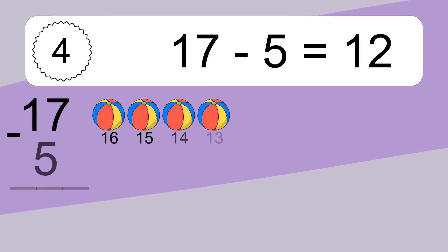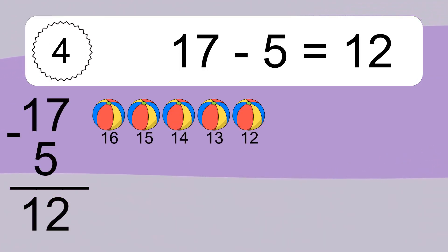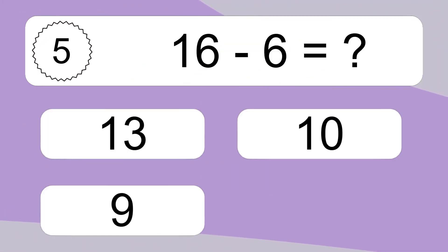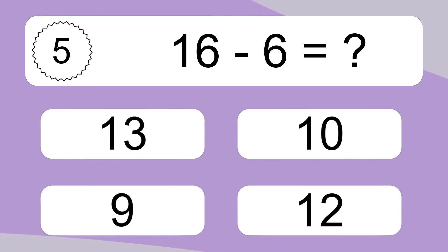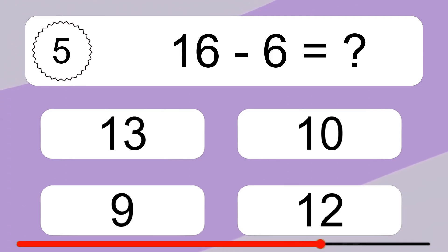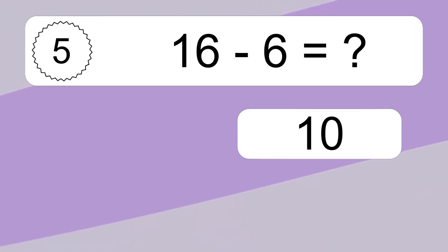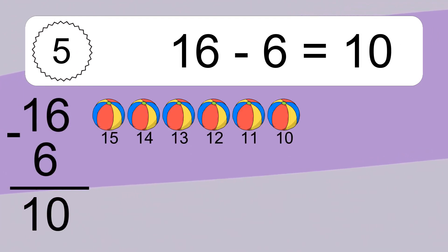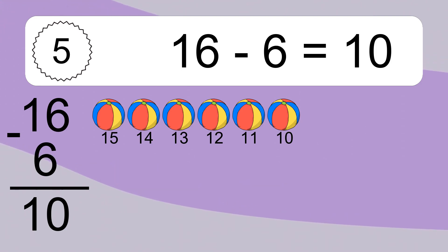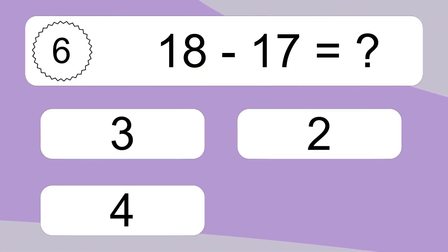17 minus 5 equals what? 17 minus 5 equals 12. Let's count it: 16, 15, 14, 13, 12. 16 minus 6 equals what? 16 minus 6 equals 10. Let's count it: 15, 14, 13, 12, 11, 10.